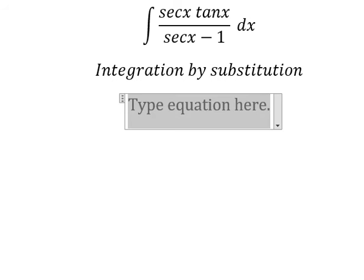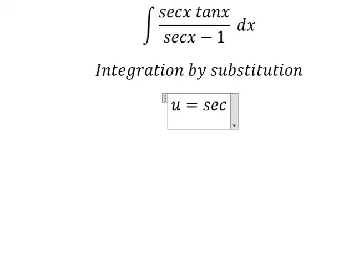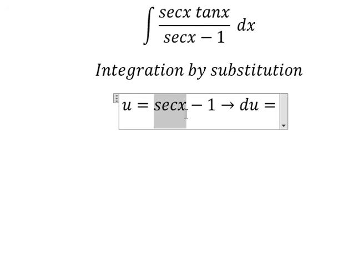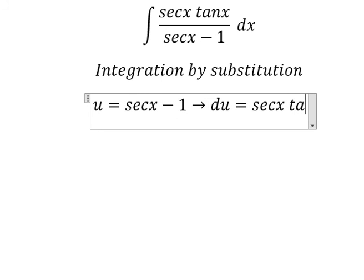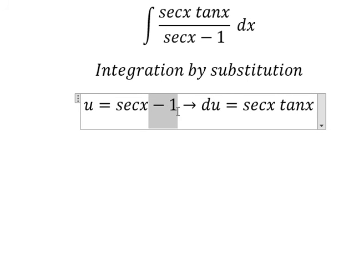So I need to put u equal to secant of x minus one. Later, we do first derivative for both sides. First derivative of secant of x is secant of x tan x. First derivative of the constant negative one is zero.